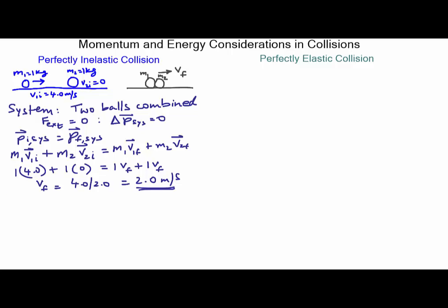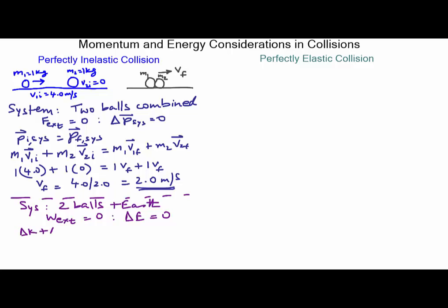But let's see what happens with energy in this case. If I define my system as the two balls plus the Earth, then the external work on this system is zero — there is no external force. So the total energy is conserved, which means the change in total energy is zero. This translates to delta K plus delta U plus delta E_th, the thermal energy, equals zero.